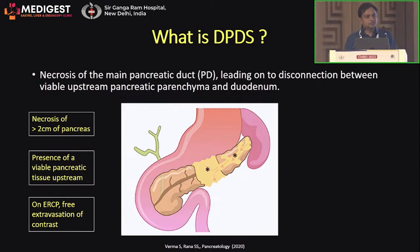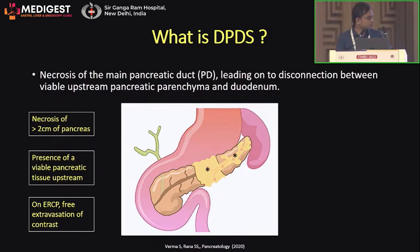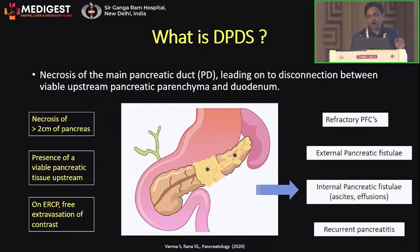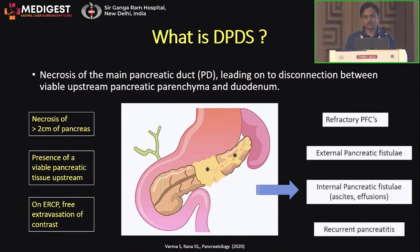Third, though not essential, if you are able to demonstrate free extravasation of contrast through the disrupted duct, that is the sine qua non. A patient with disconnected pancreatic duct syndrome usually presents with certain features, and that is when you realize this patient has DPDS — because usually you don't seek it out in the beginning.